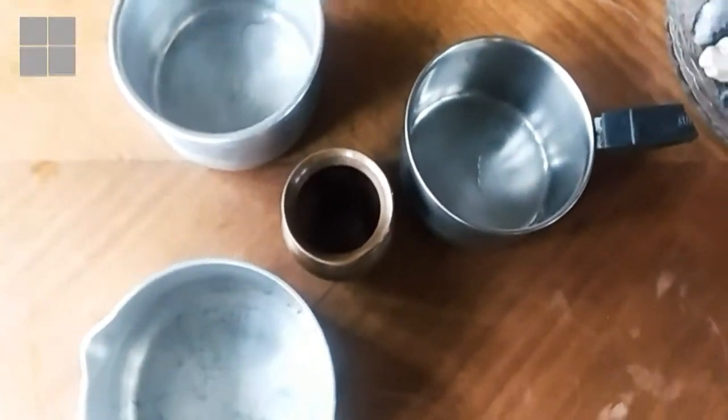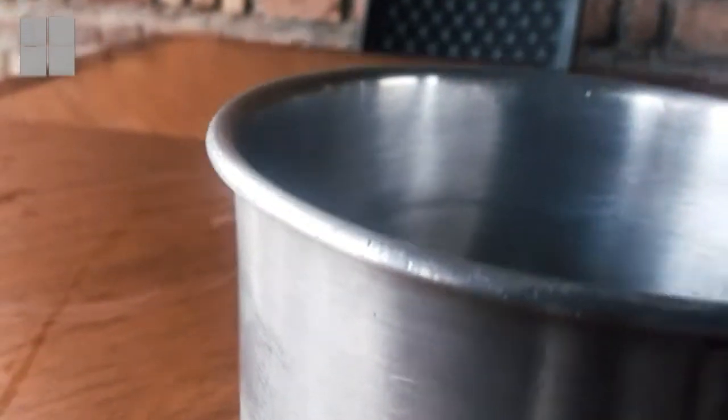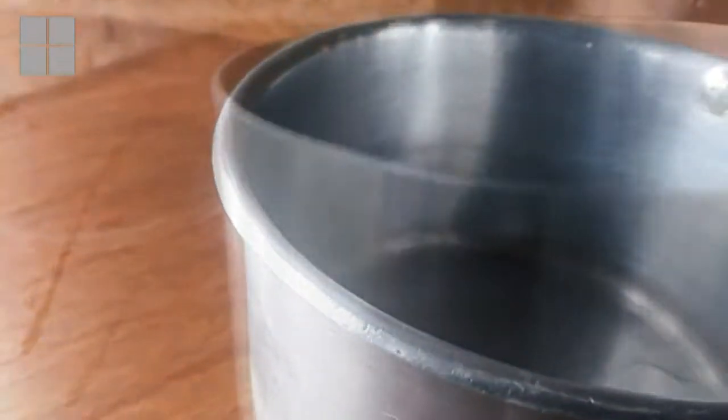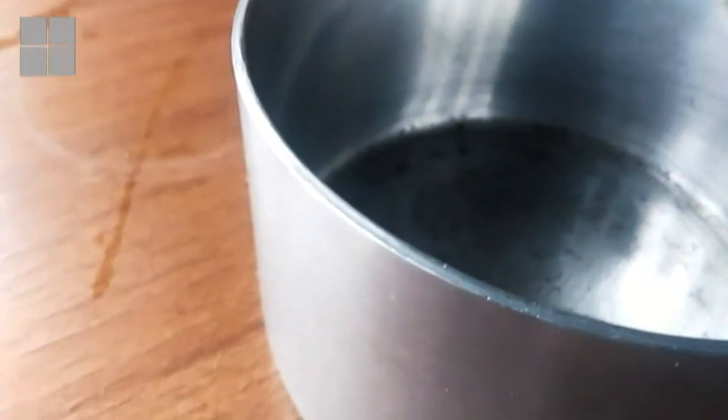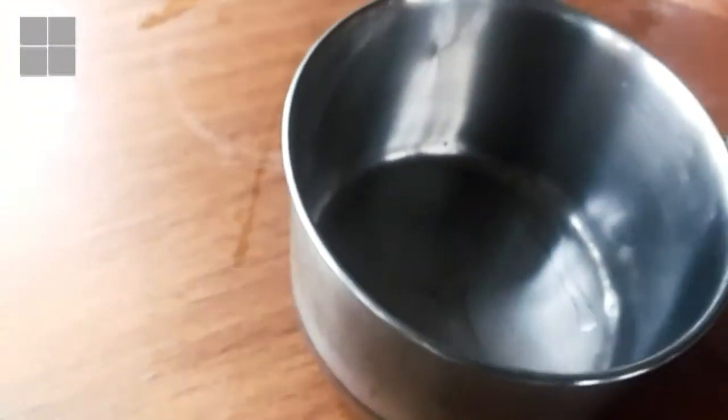Let us consider the four utensils. This is the aluminum one which has a rounded edge protruding outside. This is plain American style with a thicker body but no edge. This steel one has edges rounded up, and this is our lota in Indian style.